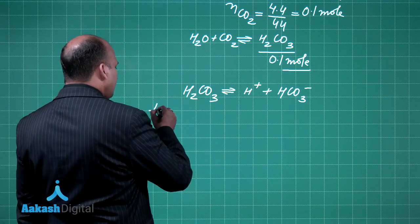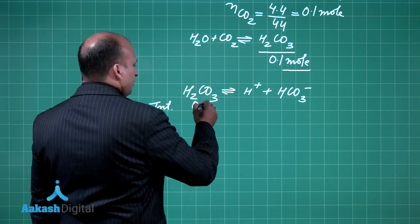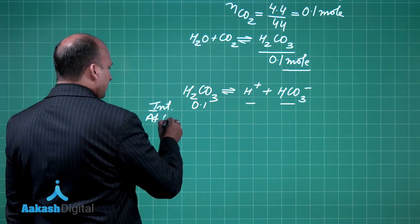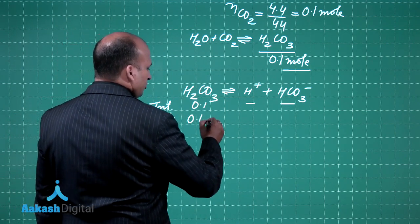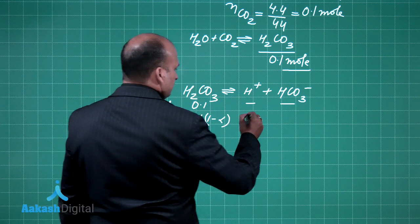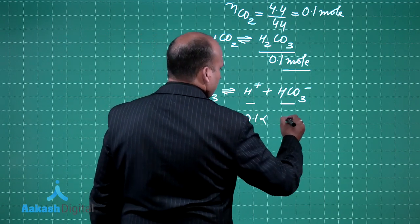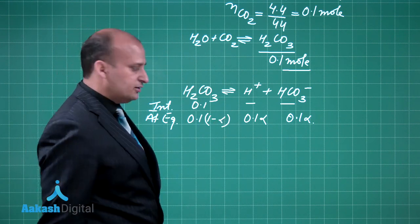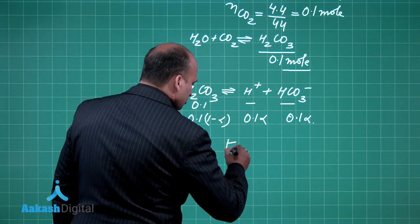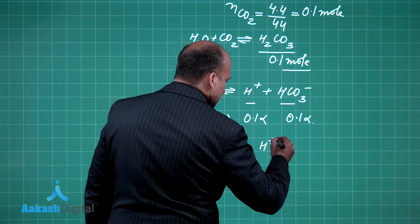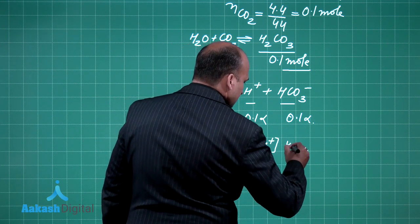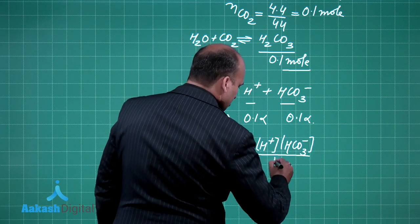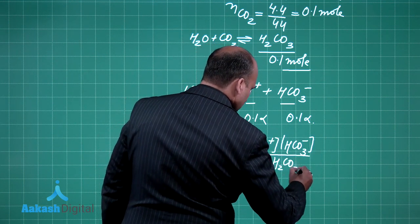Initially 0.1 mole is given to us. At equilibrium, I will say this is 0.1(1-α), this is 0.1α and this is also 0.1α. To calculate this, I require to use this formula: Ka equals [H+][HCO3-] upon [H2CO3].